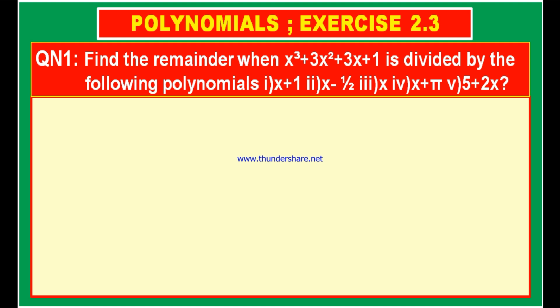We have given a polynomial x cube plus 3x square plus 3x plus 1, which is to be divided with these 5 polynomials. This is a third degree polynomial because the highest exponent of the variable x is 3, so it is called a cubic polynomial. Using the remainder theorem, if a polynomial p of x is divided by x plus a, then the remainder is p of minus a. If divided by x minus a, the remainder is p of a. Let us use that method to find the remainder.